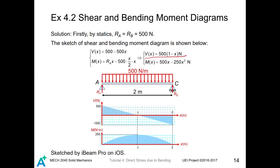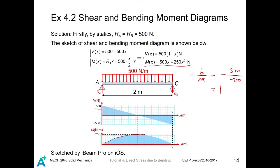We draw the shear and bending moment diagrams using those two equations. The shear force equation is linear: at x equals zero it is 500, at x equals 2 it is minus 500, giving a straight line. The moment is a quadratic equation. The axis of symmetry of the parabola is given by minus B divided by 2A, which equals minus 500 divided by minus 500, equals 1. So the axis of symmetry is at x equals 1. We draw accordingly and the diagram is done.